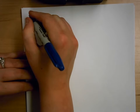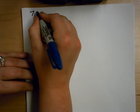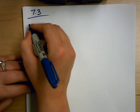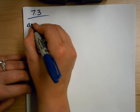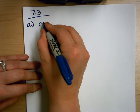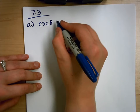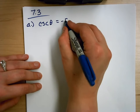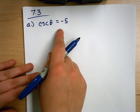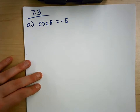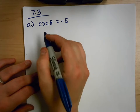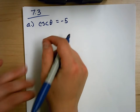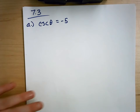Let's look at some examples of how we can use what we learned in 7.3, using reference angles to solve equations. First off, let's start with the hard one. This is also a good review of how to do inverses when you have the reciprocal functions like cosecant, secant, and cotangent.